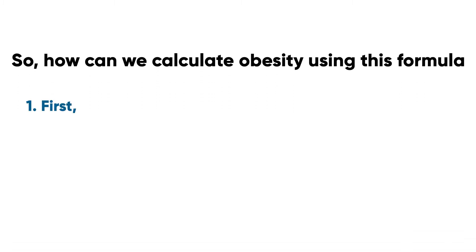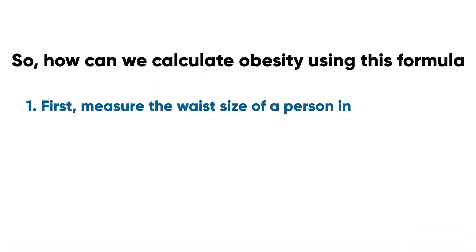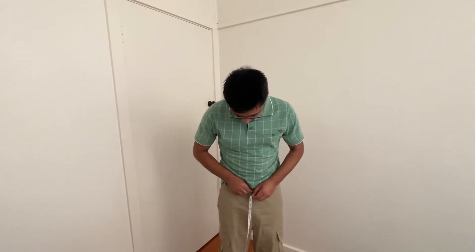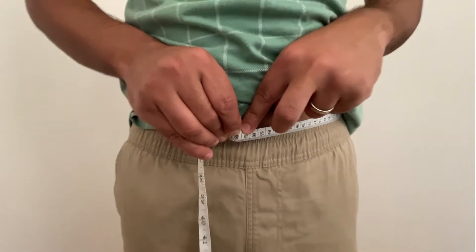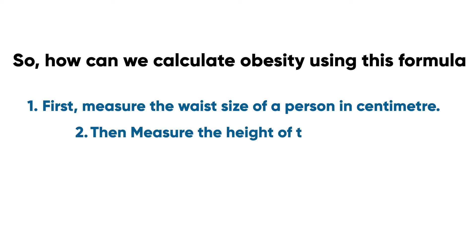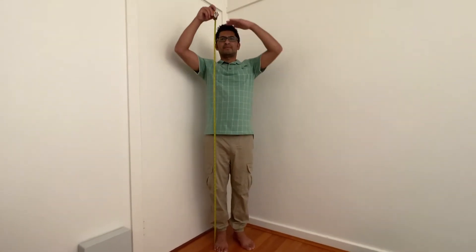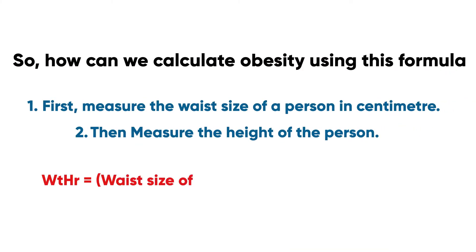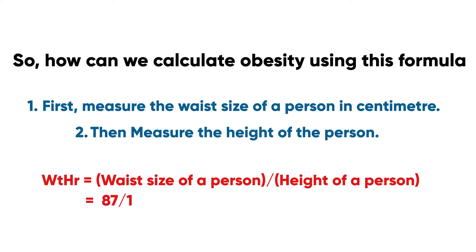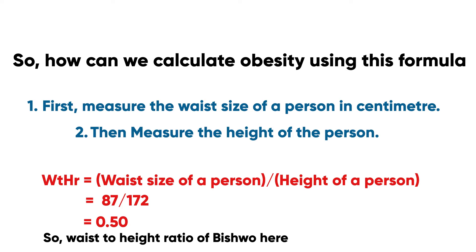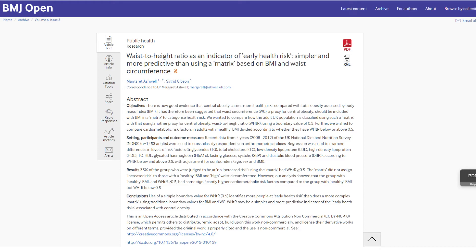So how can we calculate obesity using this formula? First, measure the waist size of a person in centimeters. As you can see here, Bisho's waist is 87 centimeters. Then measure the height of the person — here, Bisho's height is 172 centimeters. Then divide waist size by height. If you divide 87 centimeters by 172, the Waist to Height Ratio comes down to 0.50.